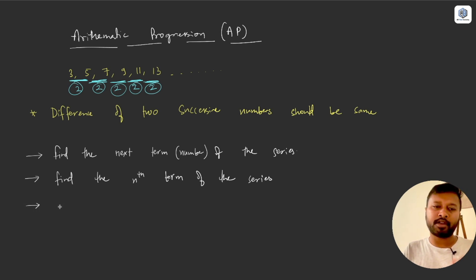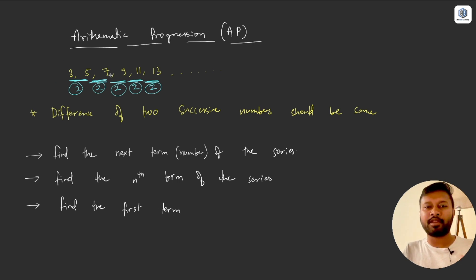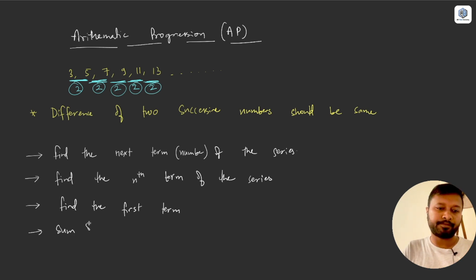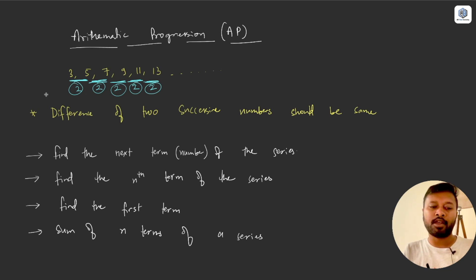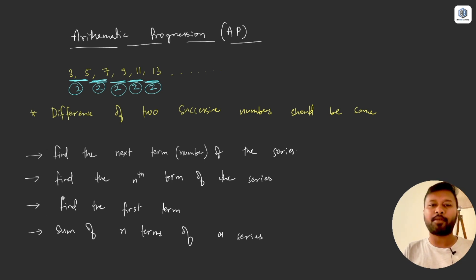They can also give you certain information about the series and ask you to find the first term. Another common question type is the sum of n terms of a series — for example, find the sum of the first four terms or the sum of the first 10 terms. There can also be miscellaneous tricky questions asked.